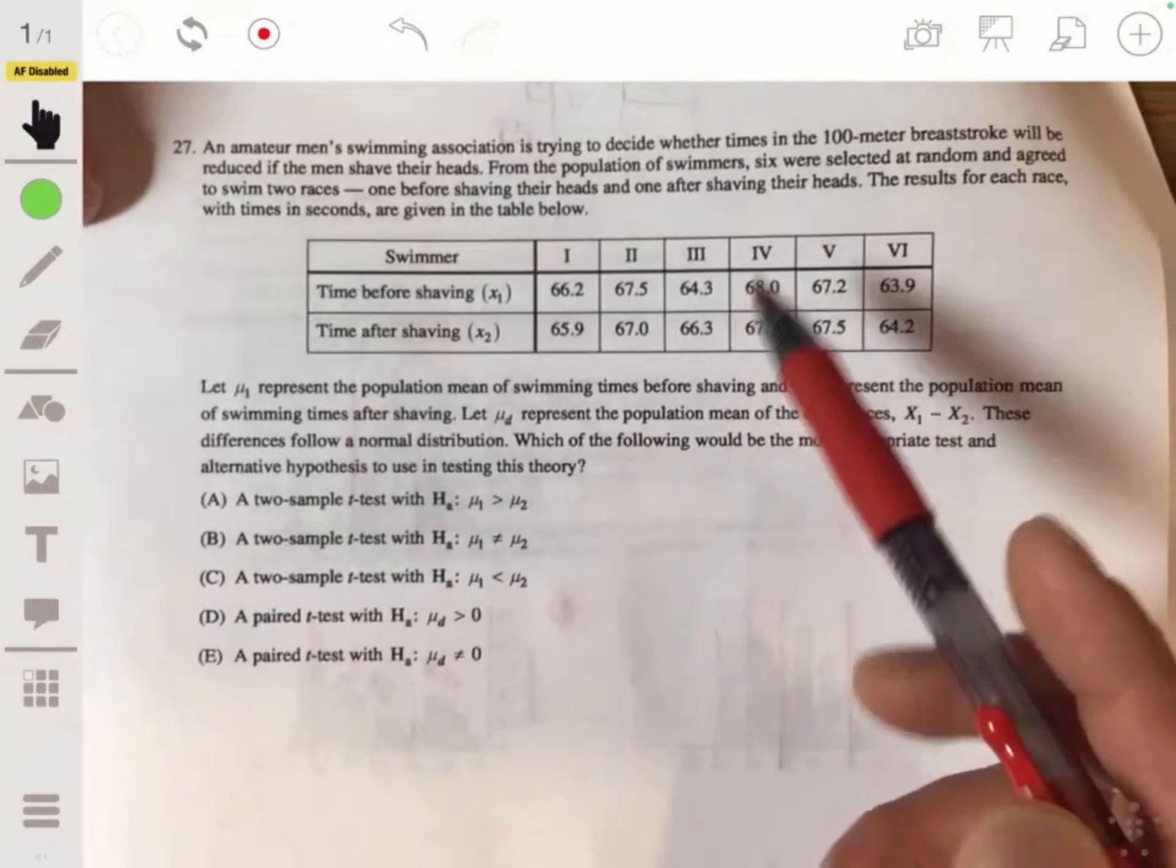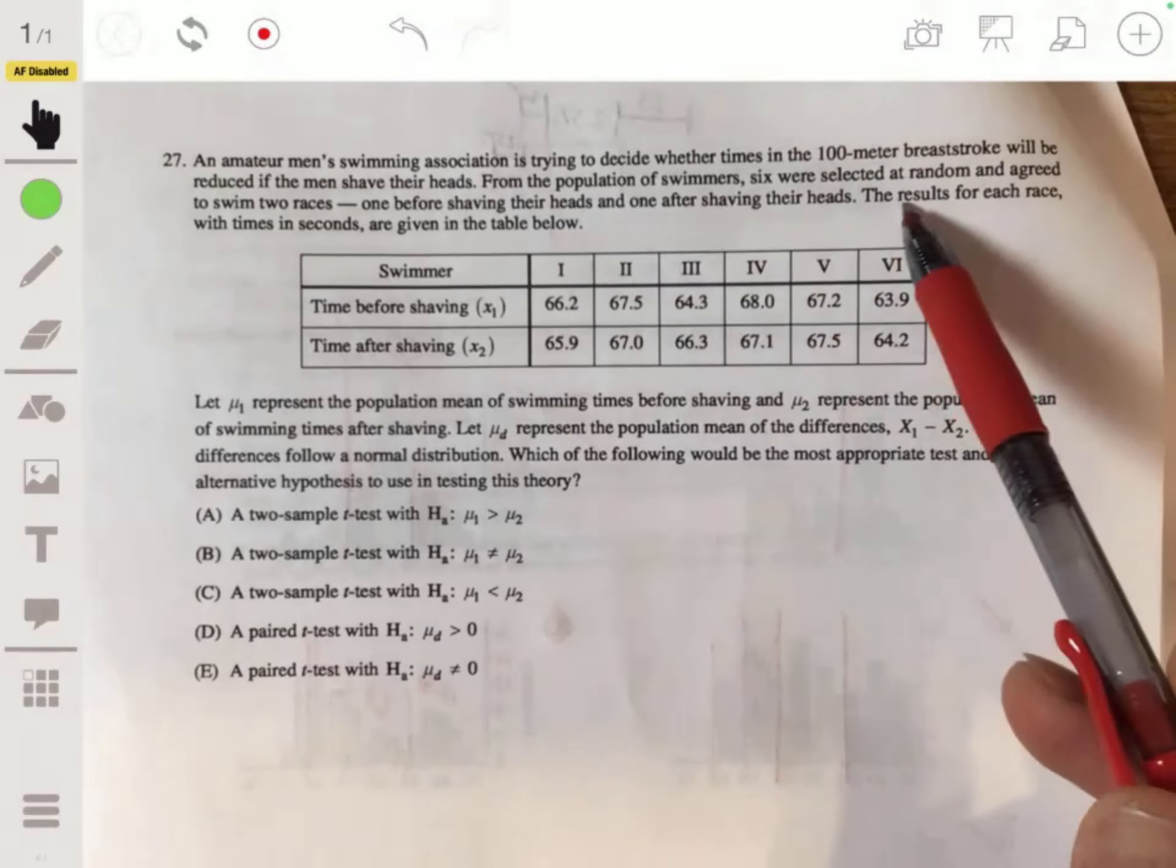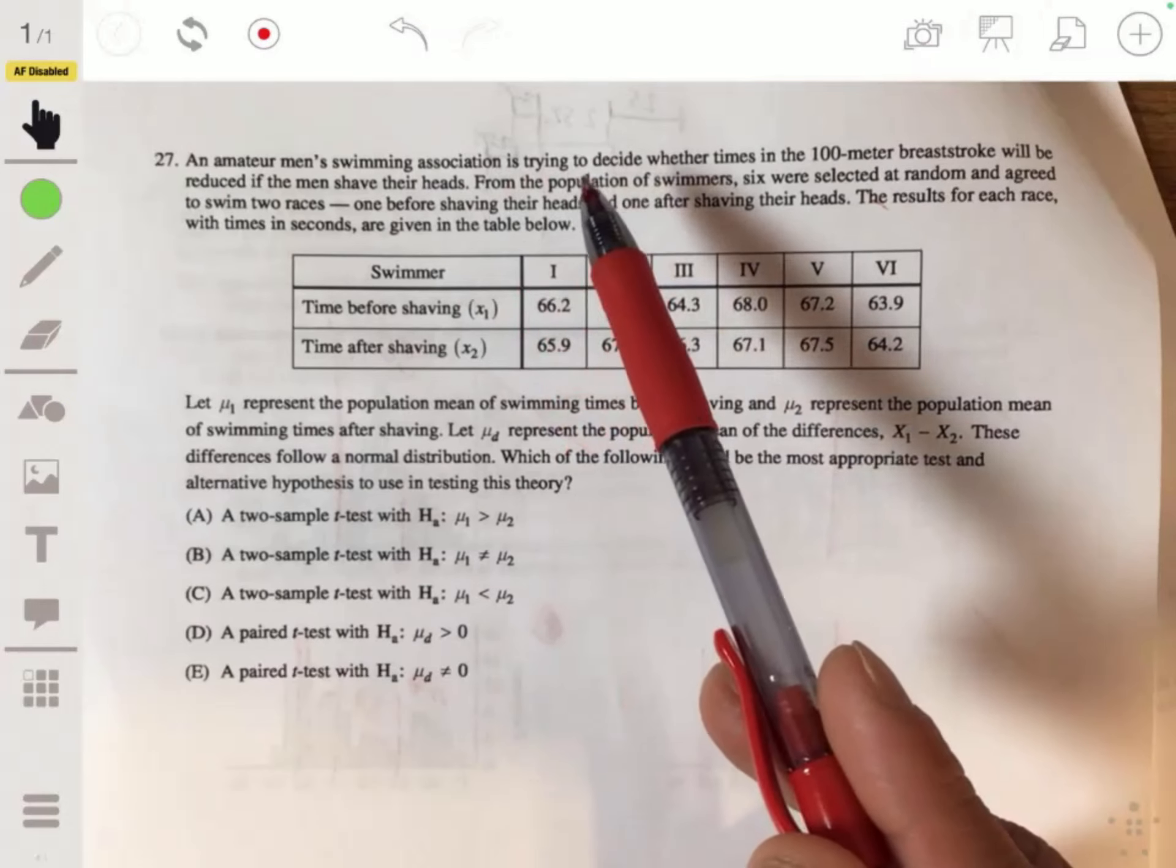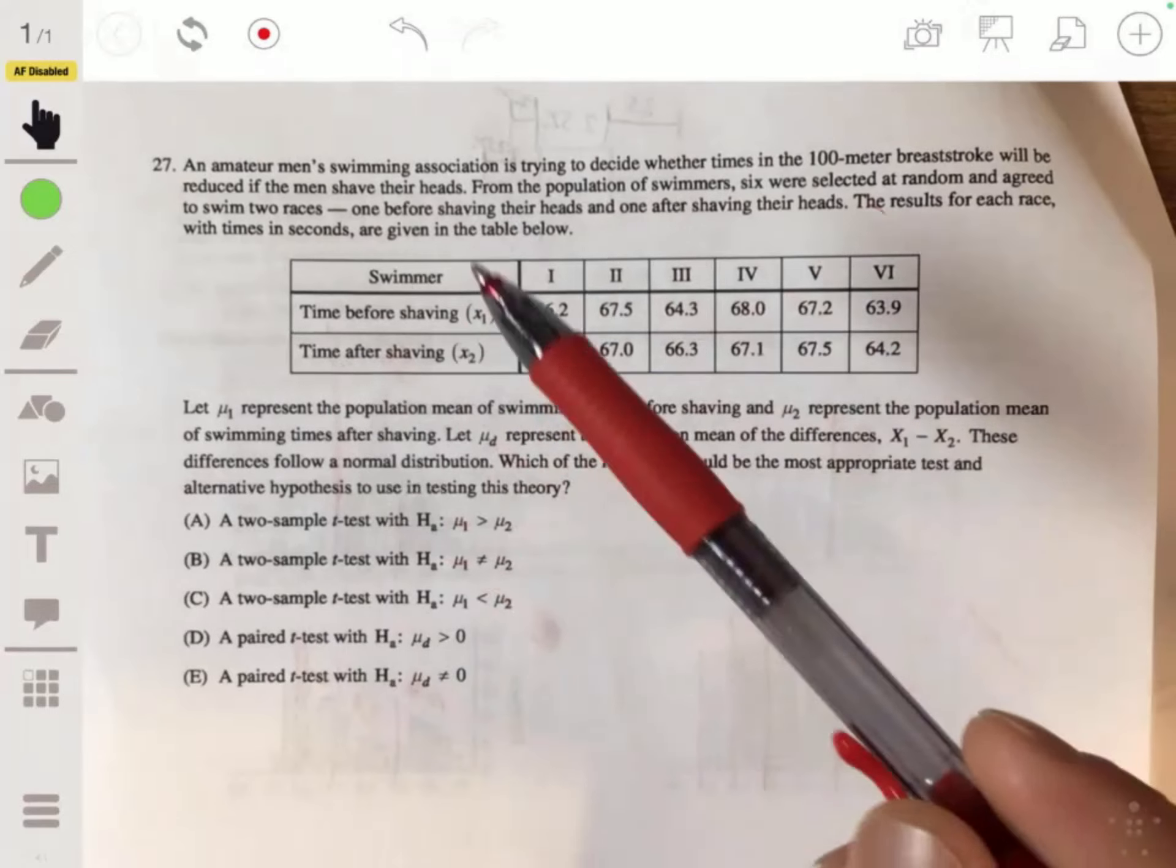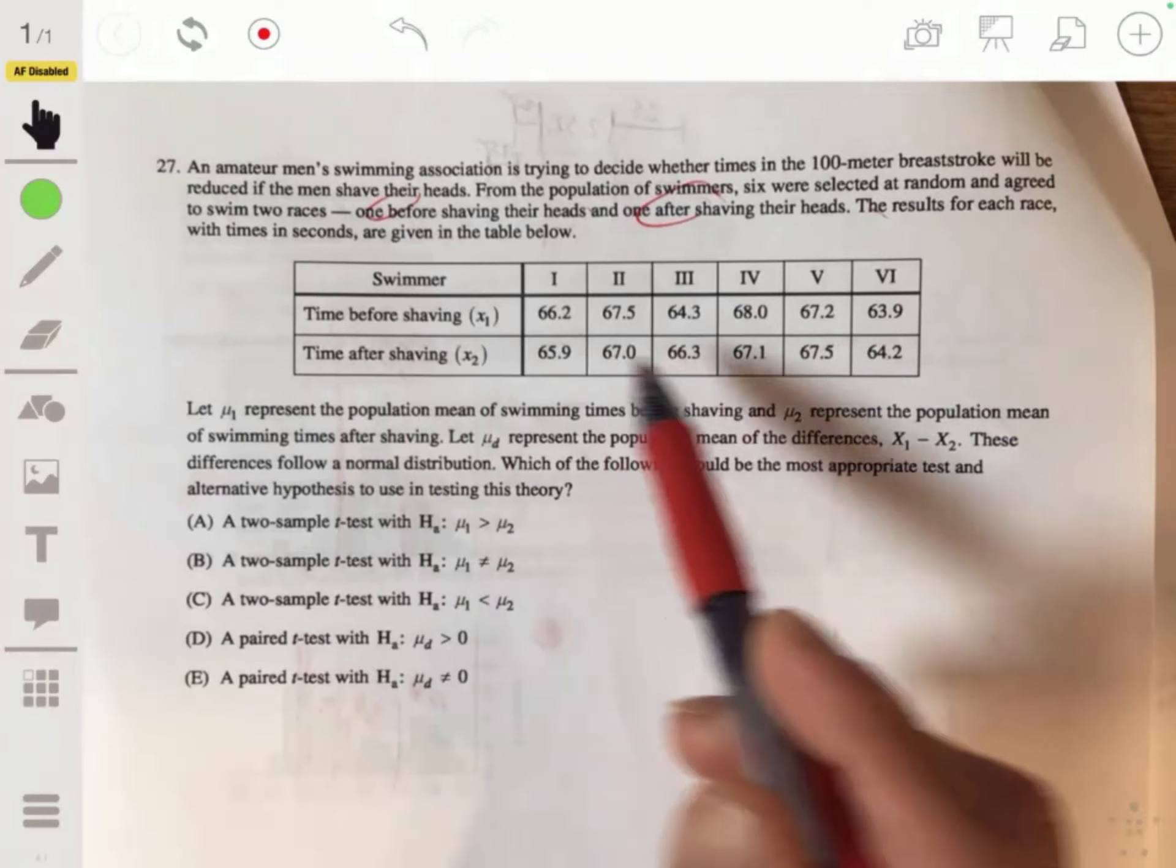27. A Men's Swimming Association is trying to decide whether the times in the 100-meter breaststroke will be reduced if men shave their heads. From the population of swimmers, six were selected at random and agreed to swim two races, one before shaving their heads and one after.